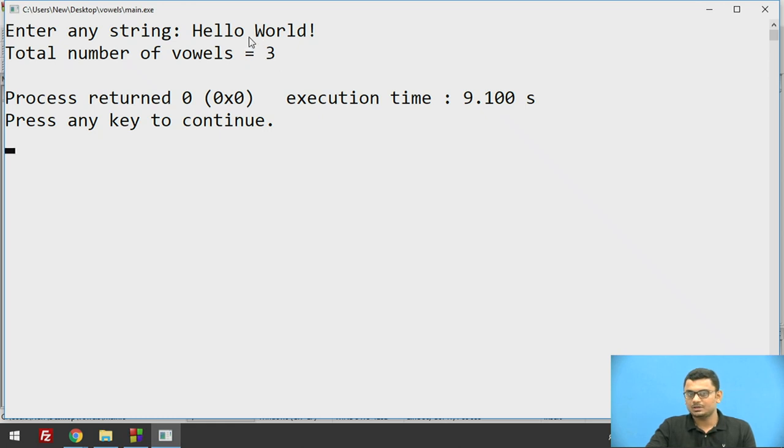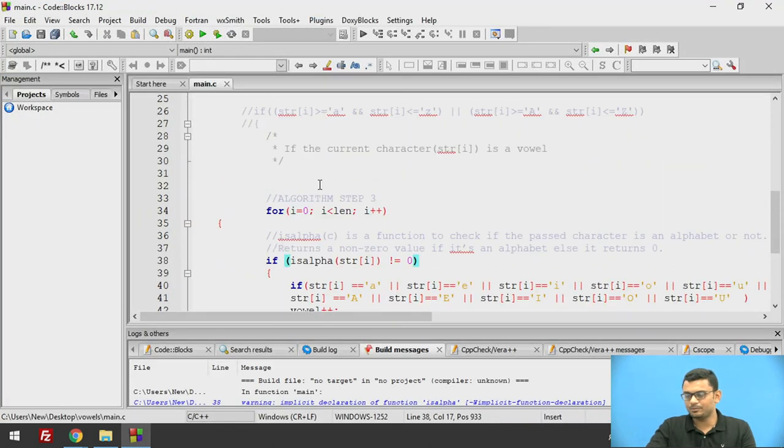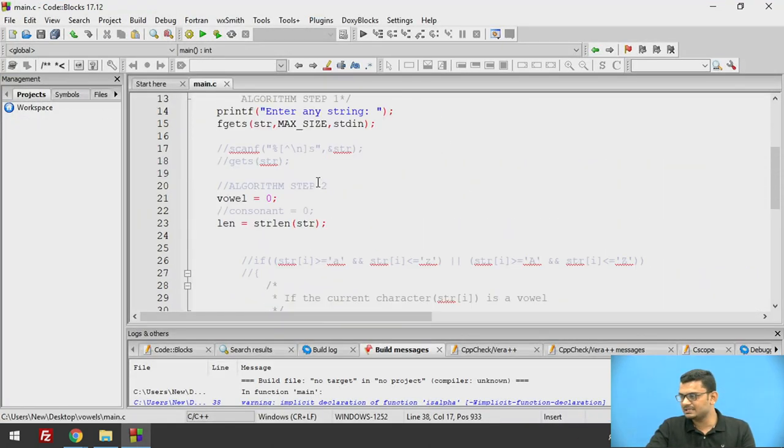Since we have used fgets function it is also including the spaces in the string. And since we have used isalpha function it is not including any of the special symbols that we have considered here. So this is the entire program to detect the vowels in the given string.